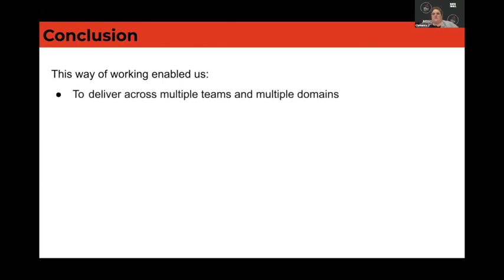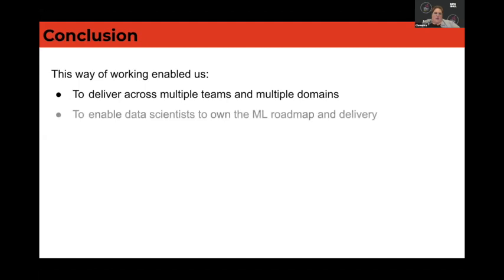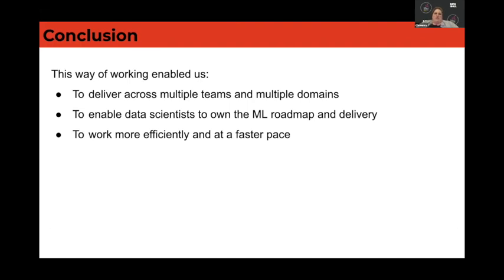It enables us to deliver across a lot of different teams. At Depop, there are about eight or nine different product teams, most of which use machine learning. We do NLP, computer vision, search engines, recommendation engines — different types of models and infrastructure. We also empower data scientists to own the machine learning roadmap and delivery. And for us, it has been about working more efficiently at a faster pace — because if you know you're going to do everything, you don't have to liaise between teams, and when you finish one part you just continue to the next.